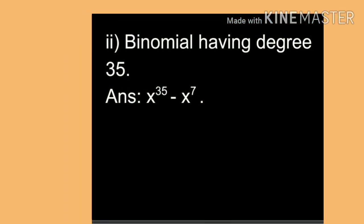Question 2: binomial having degree 35. We have to write 2 terms because binomial means 2 terms. The answer is x³⁵ - x⁷.